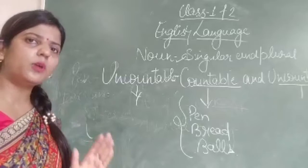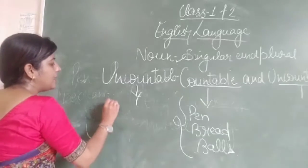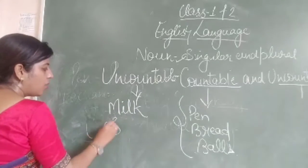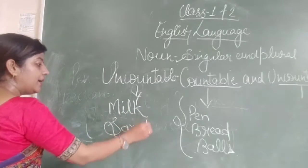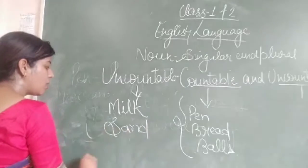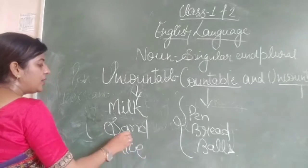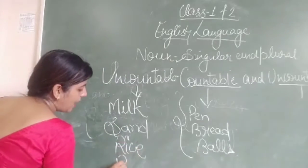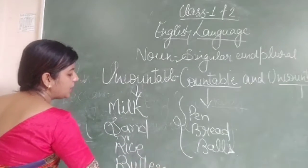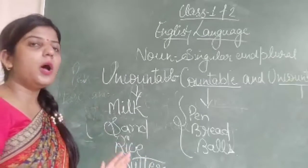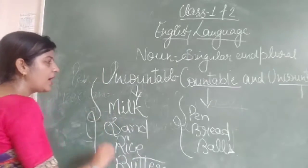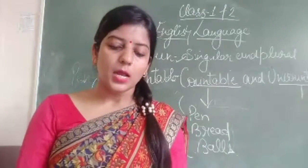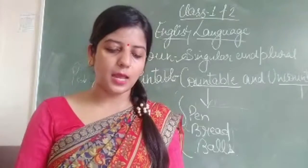Now for uncountable nouns — things which cannot be counted. For example, can we count milk? No. Can we count sand? No. Can we count rice? No. So things which we can easily count come under countable nouns, and things we cannot count come under uncountable nouns.